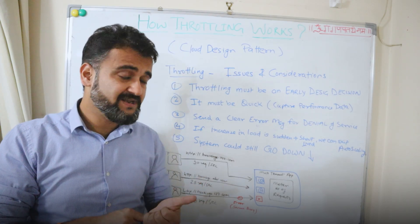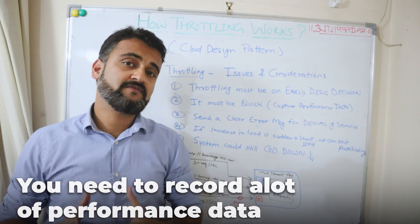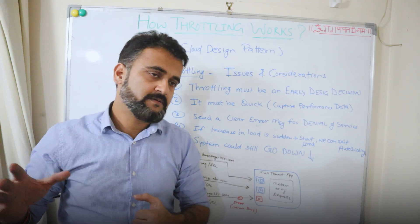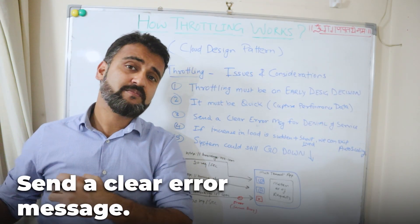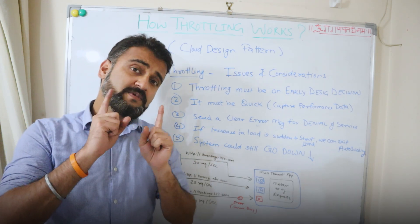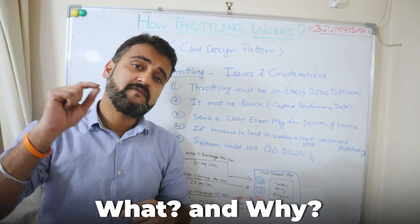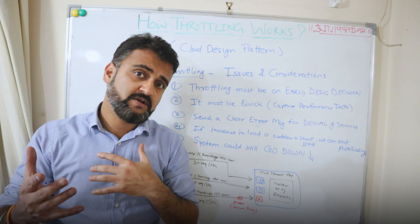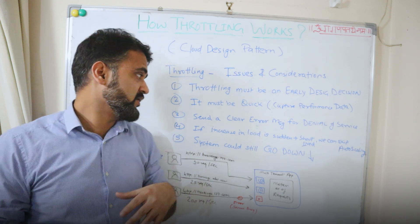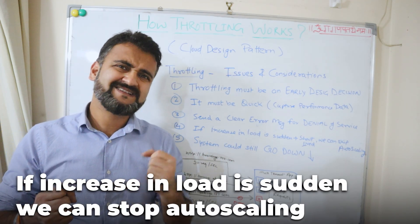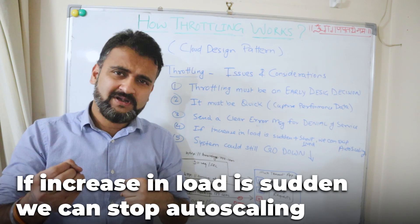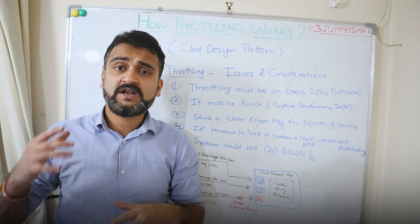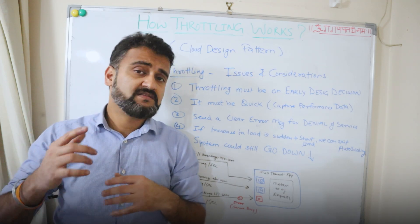To enable throttling to happen quickly, you need to record a lot of performance data to understand the right time to throttle and stop it. The third consideration is to send a clear error message to the user when deferring or denying service — they should understand exactly why they are being denied, such as exceeding their API request quota. The fourth consideration is that if the load is sudden, momentary, and short-lived, you might not need auto scaling at all — throttling itself could handle it. But if it happens as a pattern over time, then you obviously need to auto scale.